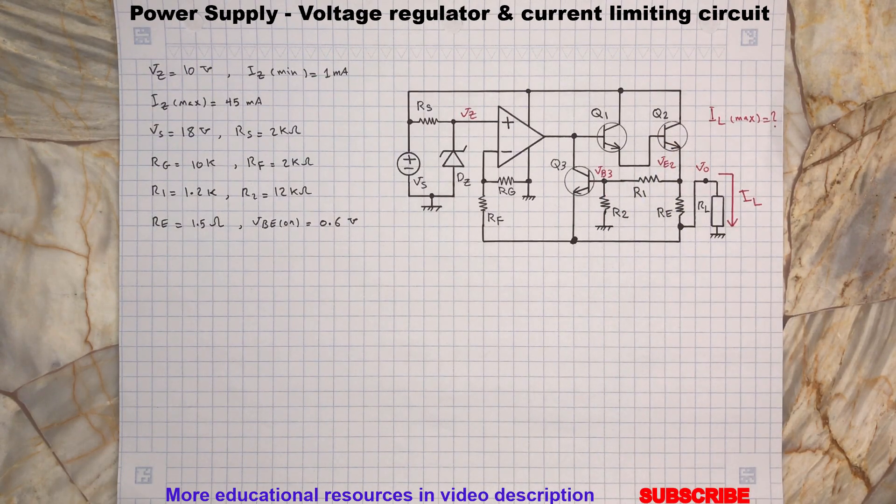The transistor Q3 with the voltage divider network R1 and R2 are part of the limiting current circuit and here is how it works.